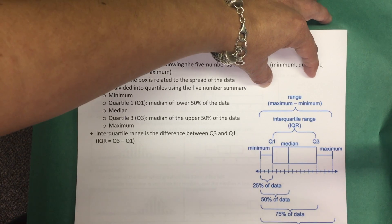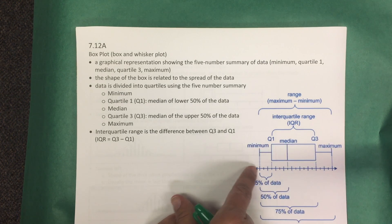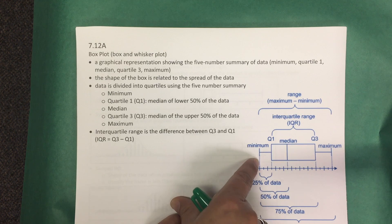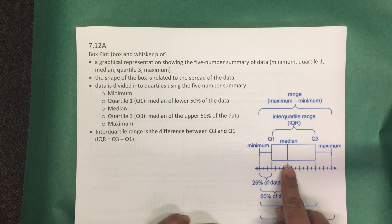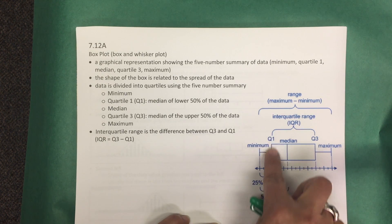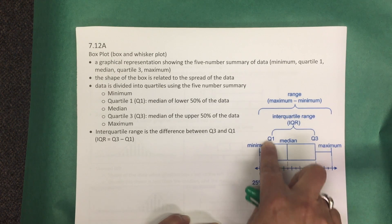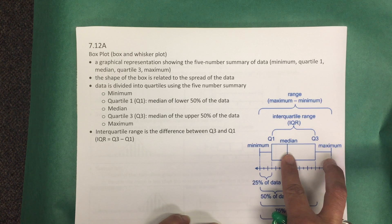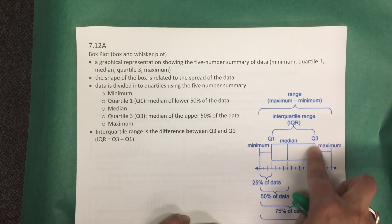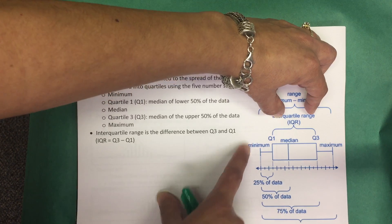Here's a picture of a box plot with all the important characteristics identified. In your box plot you have your minimum value, the median value — which is the value in the middle of your data set — and your maximum value. To find Q1, you look at the first half of your data set and find the median of those values. To find Q3, you look at the second half between the median and maximum and find the median of those values. The range is the difference of your maximum and minimum. The interquartile range is the difference of Q3 and Q1.